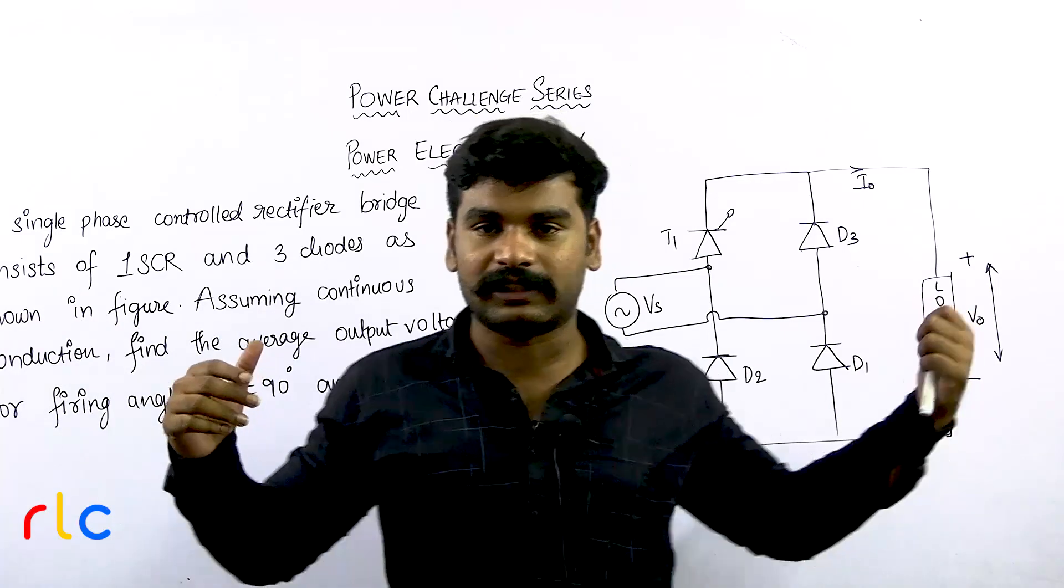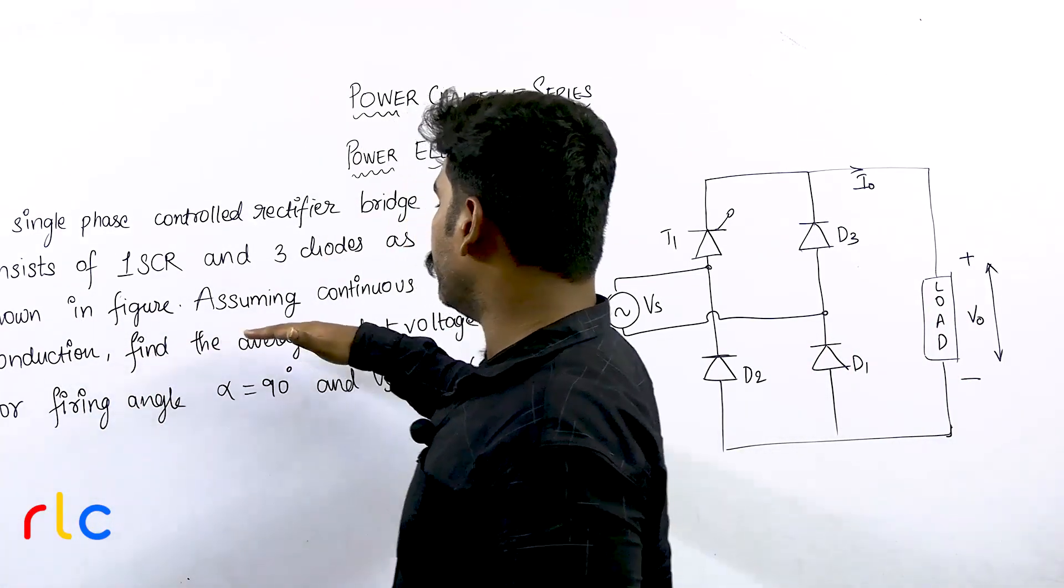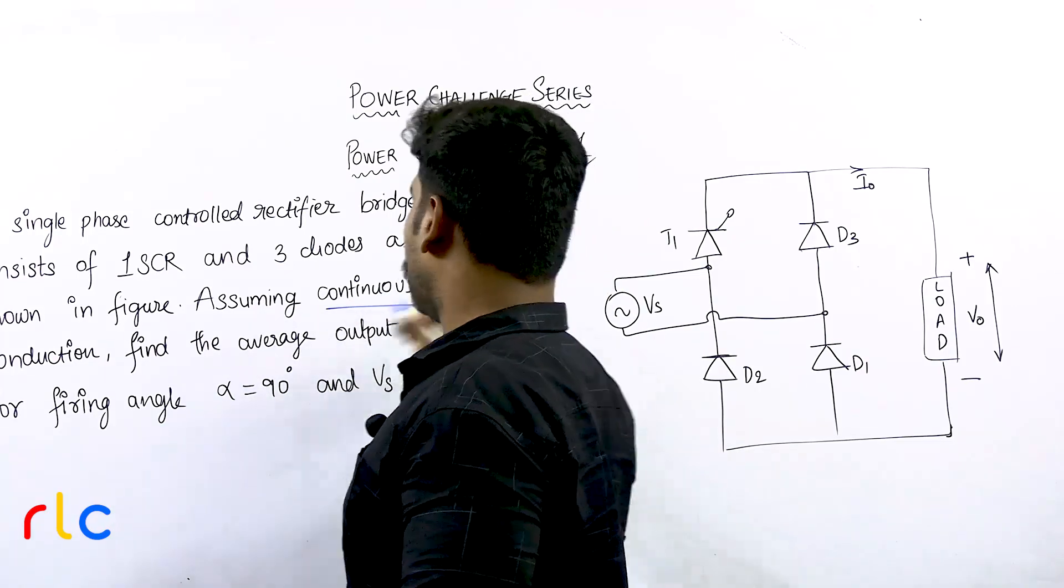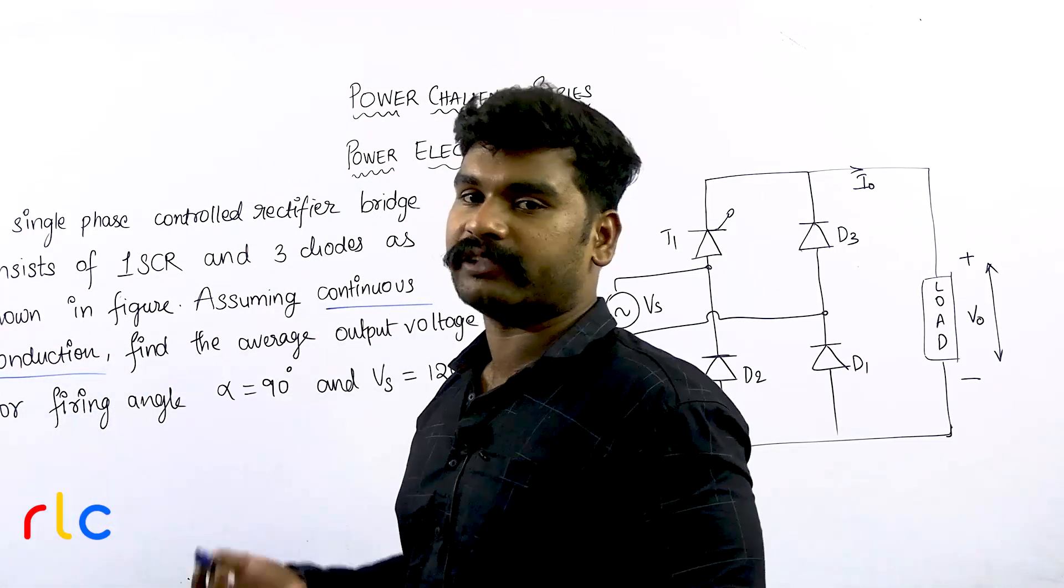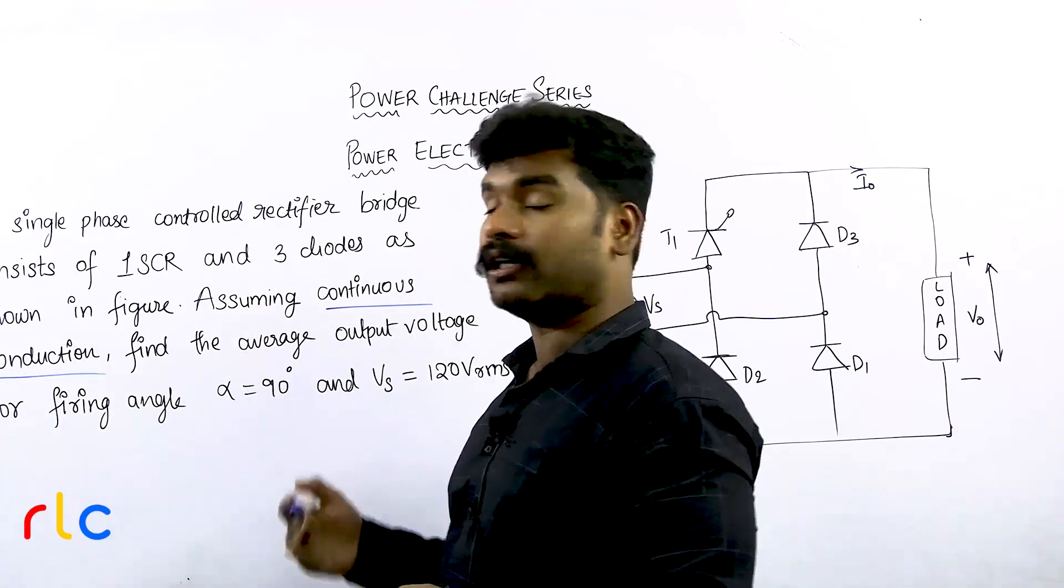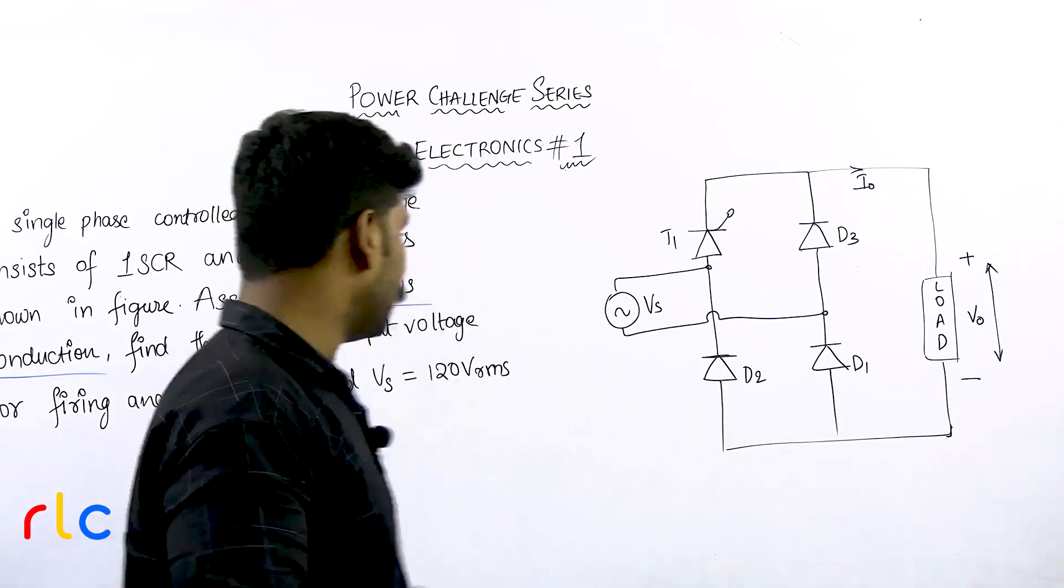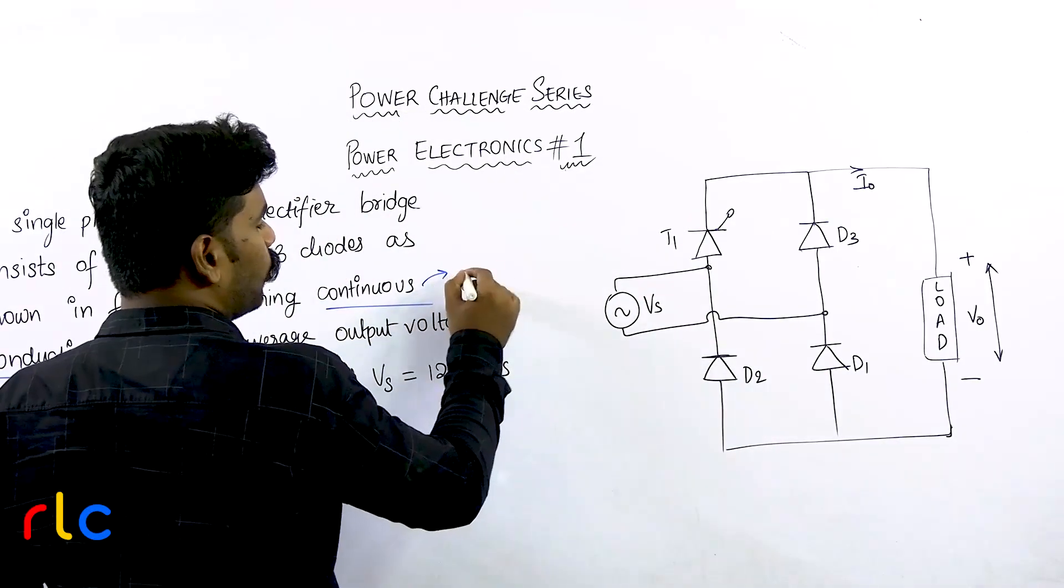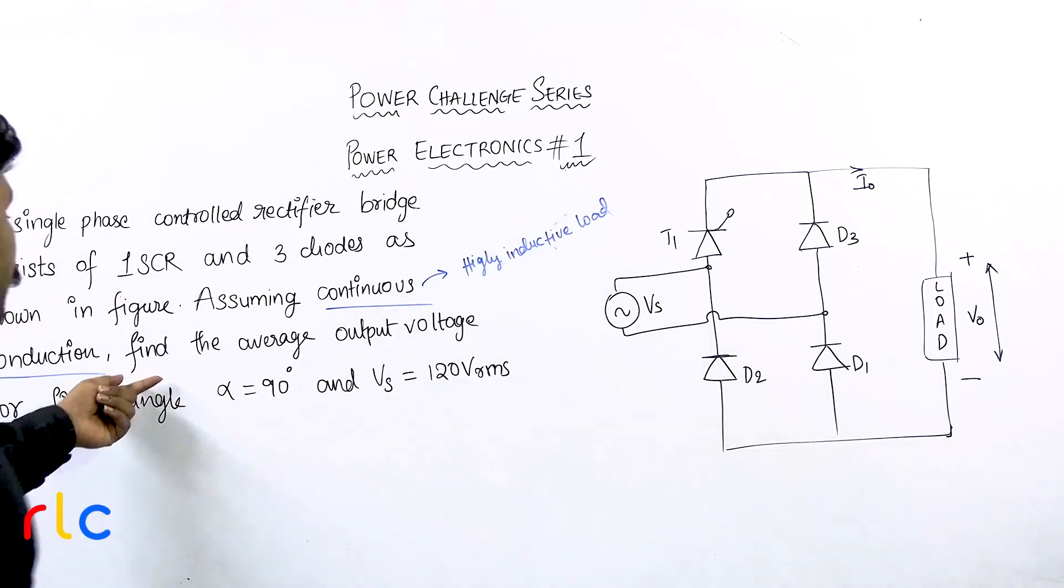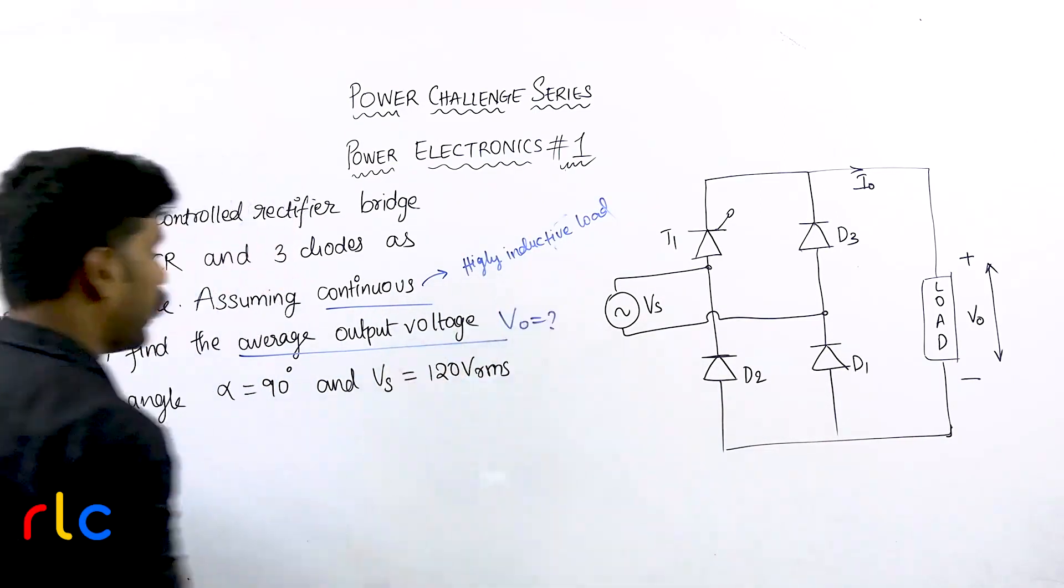As shown in the figure you can see how the construction is made. The first main important assumption is assume continuous conduction. This is very easy assuming continuous conduction. What do you mean by continuous conduction? Continuous conduction means the load is highly inductive. Find the average output voltage V_naught is what you have to find out.